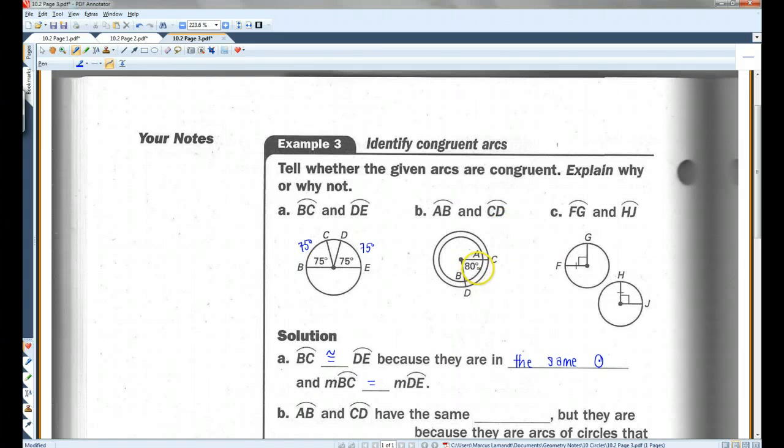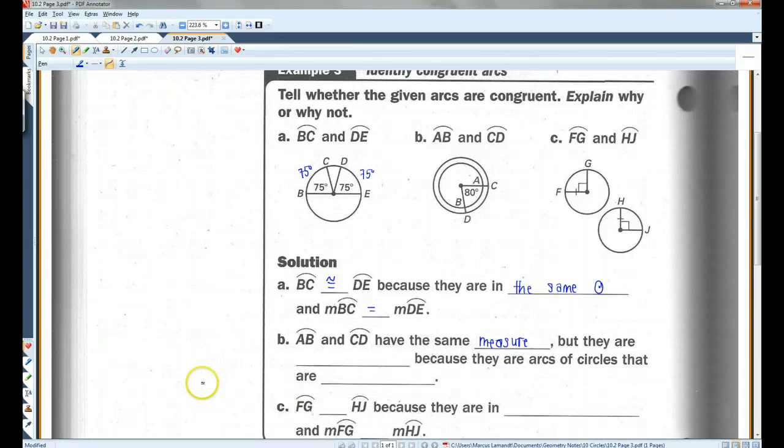Now, this one is a little bit different. Arc AB and arc CD have the same measure. But, they are not congruent because they are arcs of circles that are not congruent.